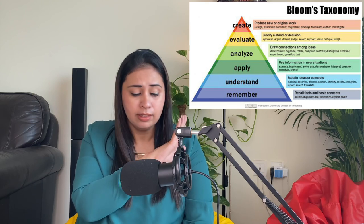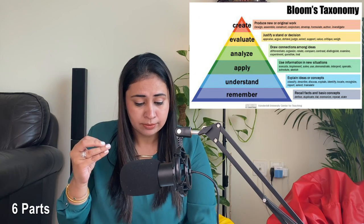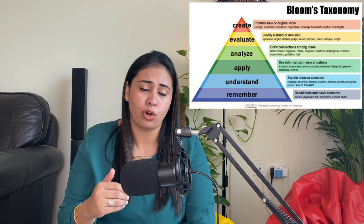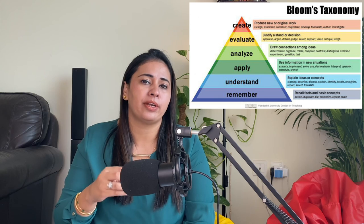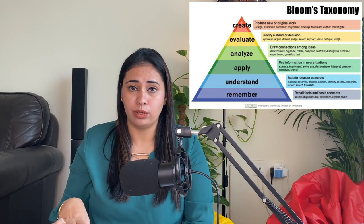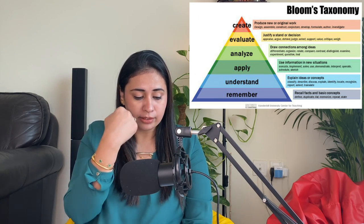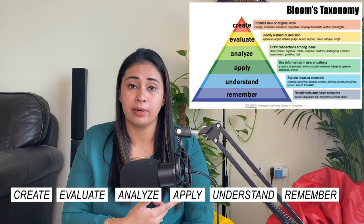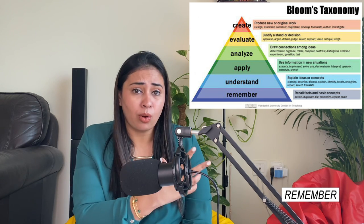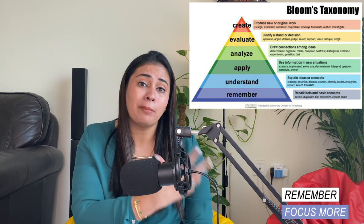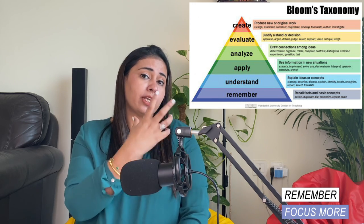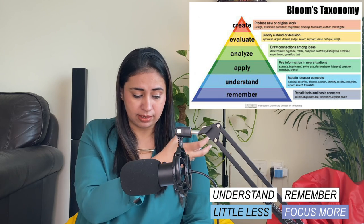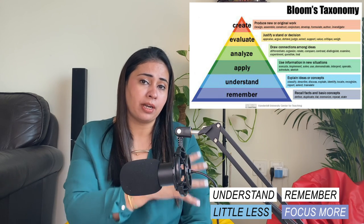Bloom's Taxonomy is divided into six parts, and that's how we need to divide our lesson plan. I'll try to include a picture of the pyramid here. When you see the pyramid, at the top we have Create, then Evaluate, then Analyze, then Apply, then Understand, and then Remember. At the bottom, Remember takes up the most space — so we need to include that the most in your lesson plan, followed by Understand, then Apply, following the pyramid ratio.